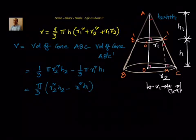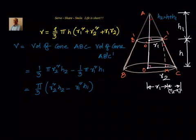Now let's compare this with what we need: (1/3) π H (R1² + R2² + R1·R2). That means I have to convert H1 and H2 in terms of H, R1, and R2 to get the formula. For that, we will go back to the figure and see that there are three similar triangles: triangle AOC, triangle AO'C', and triangle C'XC.